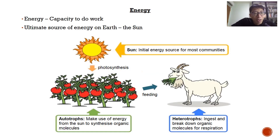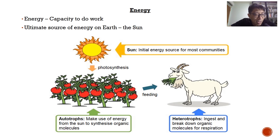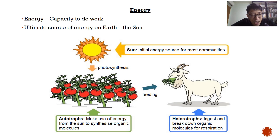Before we look at the processes of cellular respiration, we will first look at what energy is, since that is what respiration produces. Energy is defined as the capacity to do work, and at the cellular level that means various cell functions — cell movement, synthesis of proteins, and so on. The ultimate source of energy on Earth is the sun, because sunlight carries light energy which is captured by autotrophs — organisms that are able to capture light energy for photosynthesis.